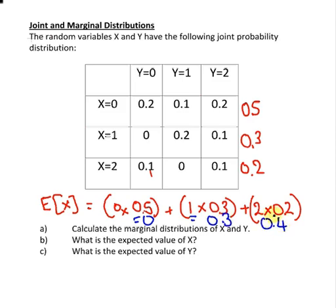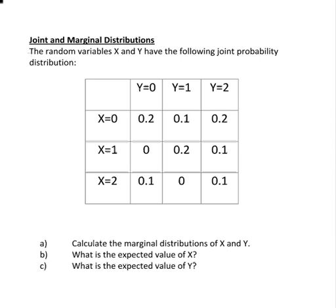So the expected value of X is going to be 0.7. I'm just going to write that up here, so the expected value of X is 0.7.